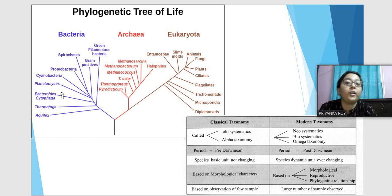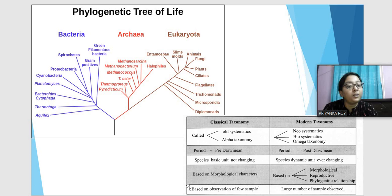There are two main types of taxonomy: classical and modern. Classical taxonomy is the old alpha taxonomy — pre-Darwinian, based on morphological characters with only a few samples observed. Modern taxonomy is omega taxonomy — post-Darwinian, considering morphological, reproductive, and phylogenetic characters, with a large number of samples observed.